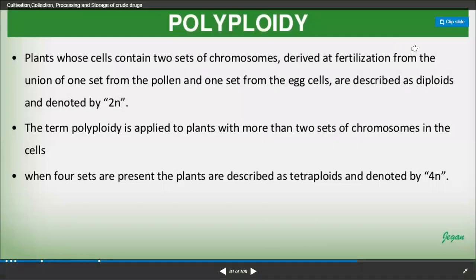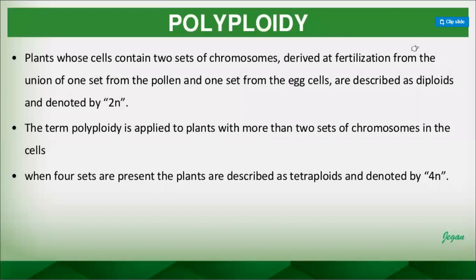Today we are going to discuss the different techniques for the cultivation to get hybrid quality or good quality of chemical constituents as well as the plant part. There are three methods being applied in advanced cultivation technology.